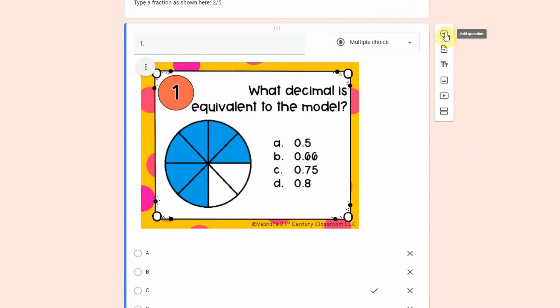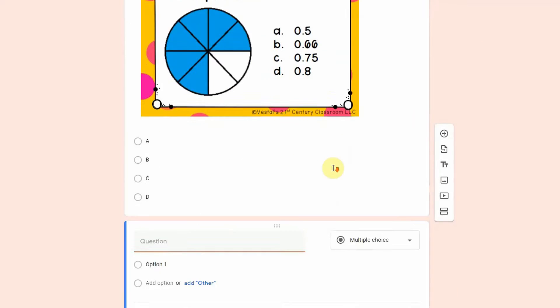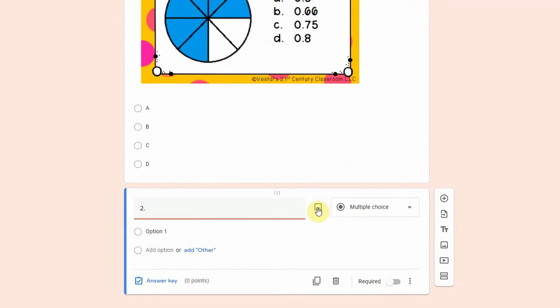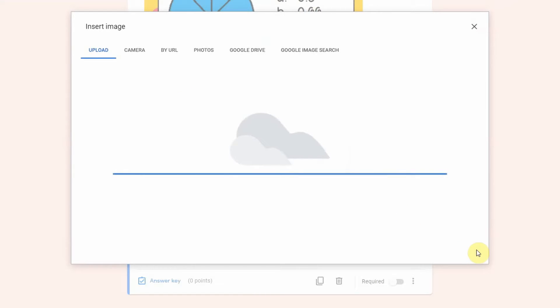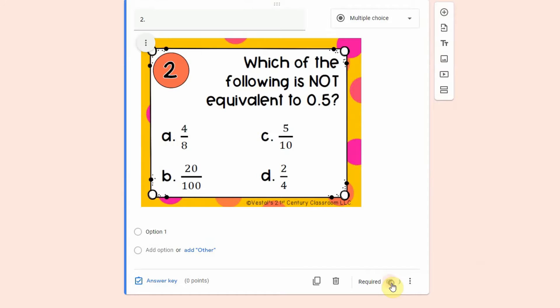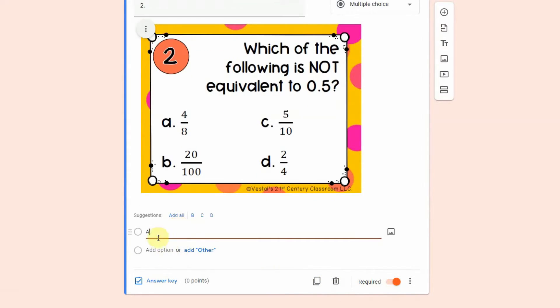But I just wanted to show that to you as another option. Now when you are ready to add another task card you're just going to click on the plus sign and you're just going to repeat that process again. So I'm going to type the task card number, upload the image.